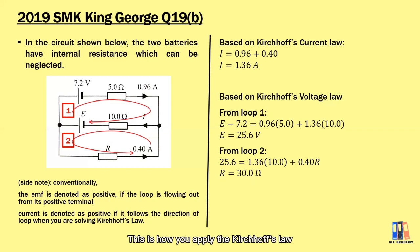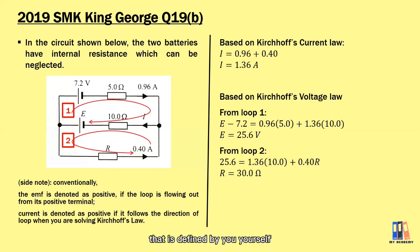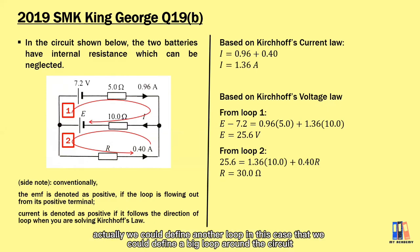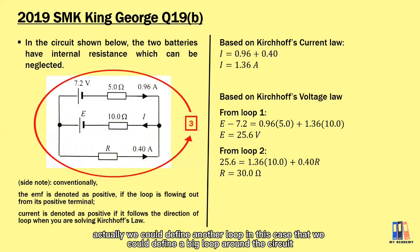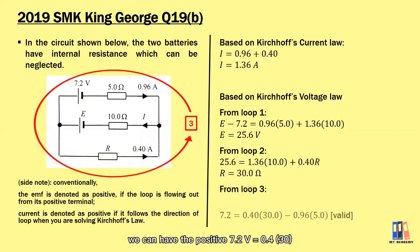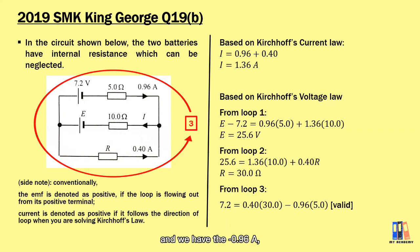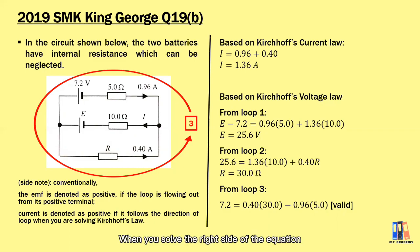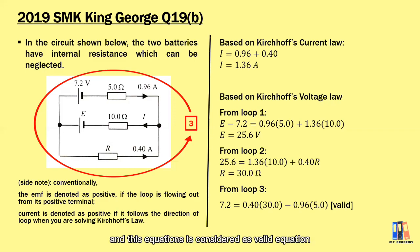Whether positive or negative depends on two things: the direction of the loop you define, and then whether the EMF and current align with that loop. We can also define a third, larger loop around the entire circuit. From that loop: +7.2 V = 0.4 A × 30 Ω − 0.96 A × 5 Ω, where the 0.96 A current is negative since it opposes the loop direction. Solving the right-hand side gives 7.2, confirming the equations are valid.